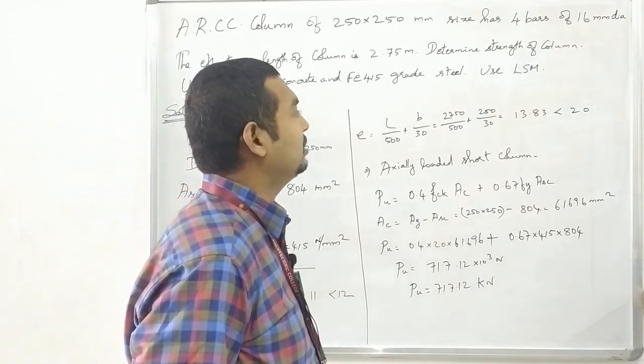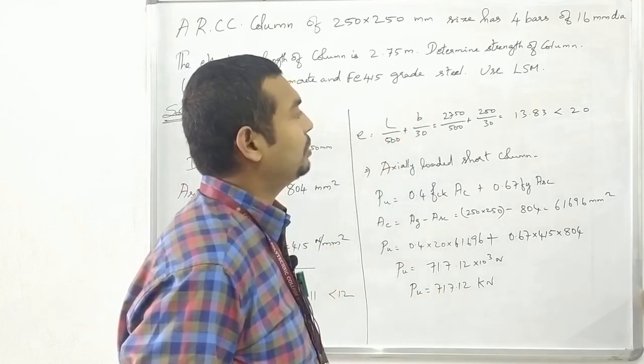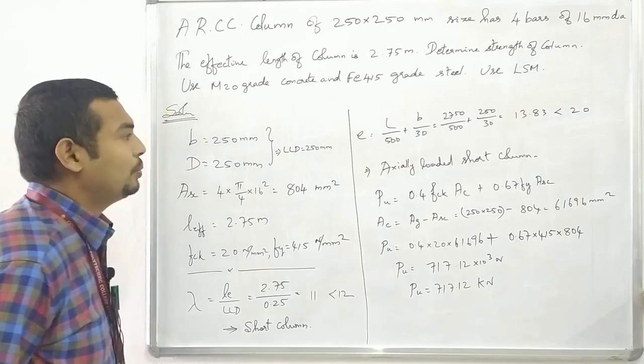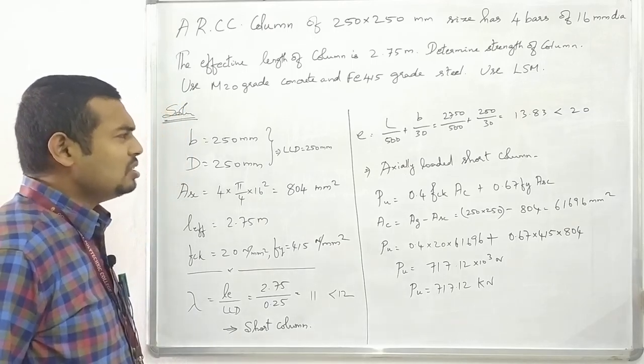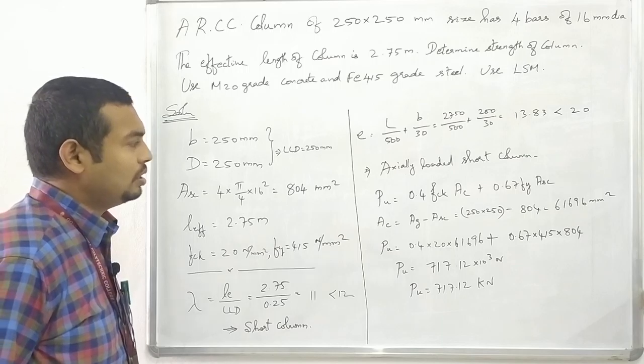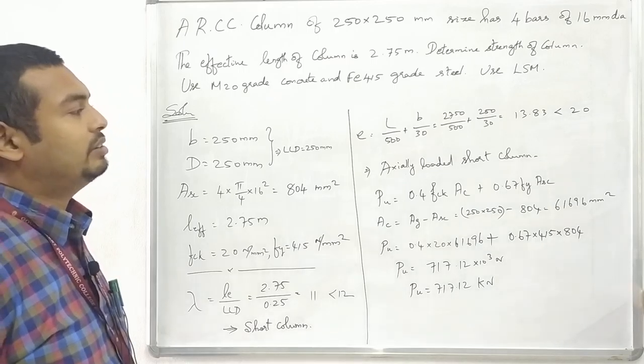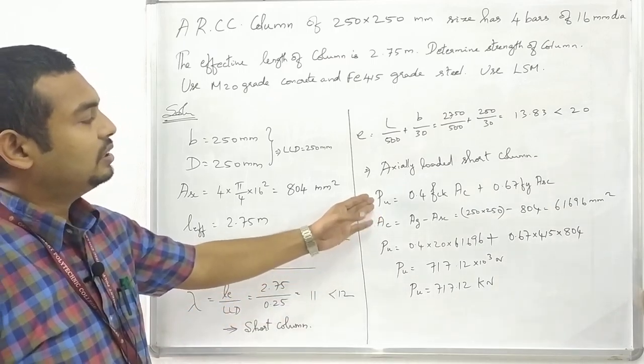Slenderness ratio equals effective length by least lateral dimension: 2.75 by 0.25 equals 11, which is less than 12, so this is a short column. Next, minimum eccentricity check: length by 500 plus width by 30 equals 2.75 by 500 plus 250 by 30, which gives 13.83, less than 20 mm.